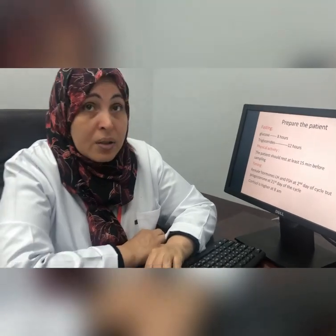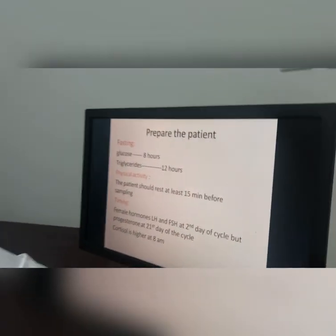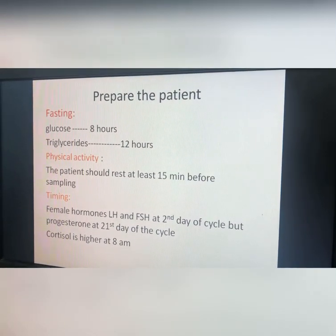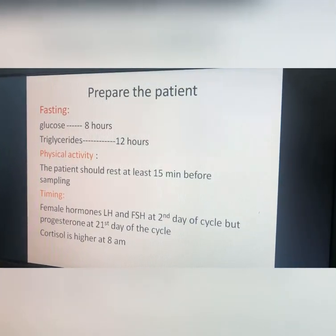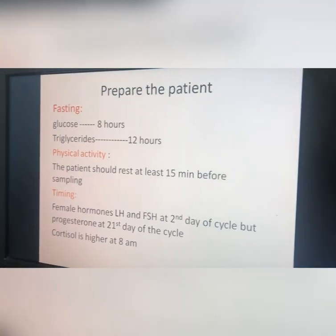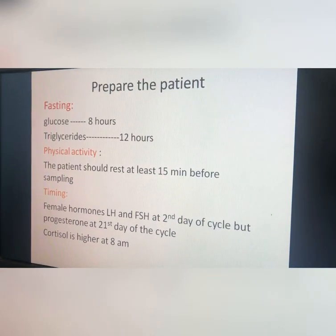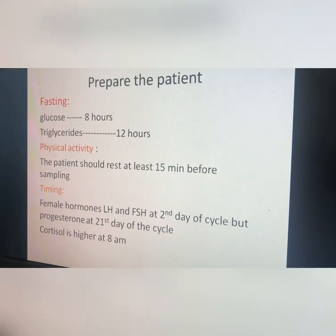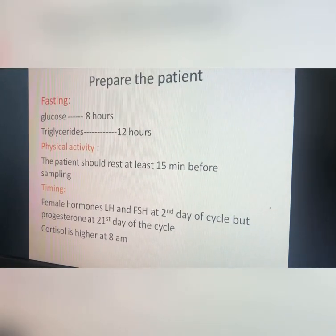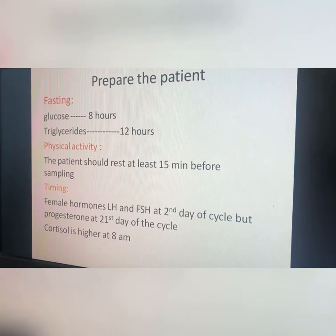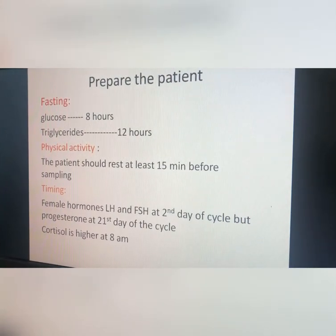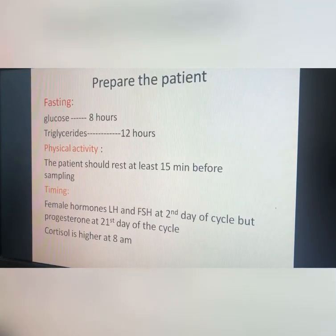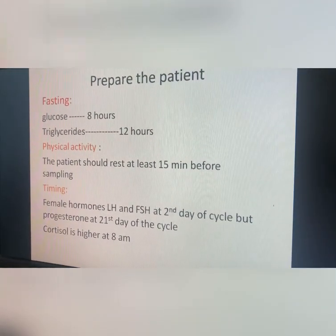Some tests need fasting, such as glucose — only eight hours. If you prolong the period of fasting, your liver starts producing glycogen and converting it to glucose, and the result will not be accurate. Only 8 hours is needed for glucose. Also, triglycerides require a more prolonged fasting period of 12 hours.